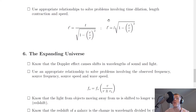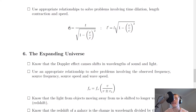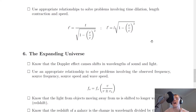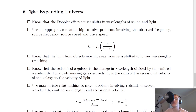Lastly, you should be able to use appropriate relationships to solve problems involving time dilation, length contraction, and speed. You can write these in terms of the Lorentz factor gamma: t' = γt, or l' = l / γ. Remember it helps to write your speed v in terms of the speed of light c so that the c values can cancel and simplify the equation.